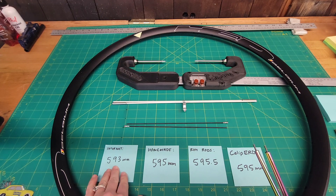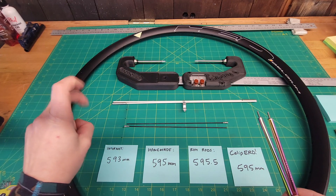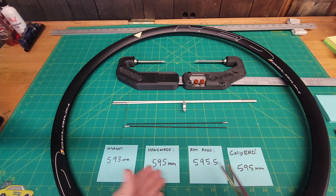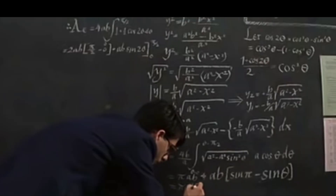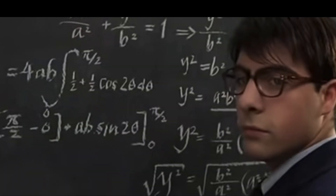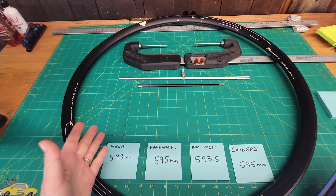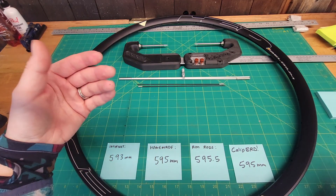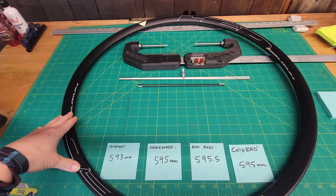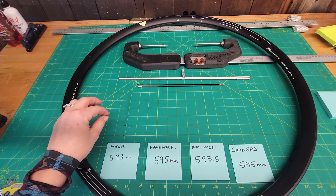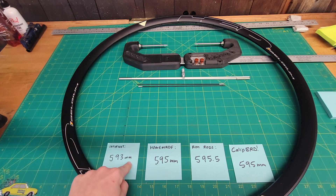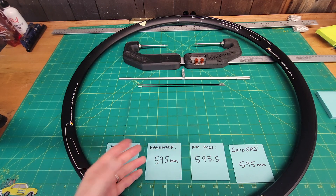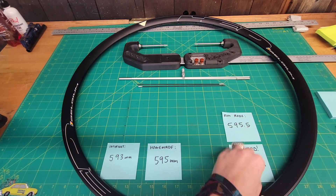The rim rods measure a little differently because, in my opinion, the machined metal piece doesn't sit quite as far into the rim as an actual spoke nipple — it's very close but not quite there, which is why the rim rod measurement comes out slightly longer. The internet measurement was incredibly off — two millimeters off. Let's put these into a calculator and see if any of this even matters. I'm using the DT Swiss spoke calculator with a saved build using this actual rim.